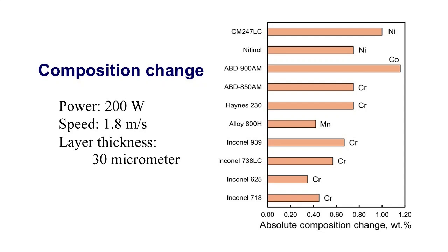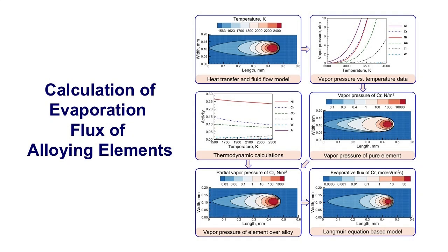A mathematical model is used to simulate the vaporization of alloying elements and the resulting composition change during laser powder bed fusion of nickel alloys. A heat transfer and fluid flow model is used to estimate the temperature field. The top surface temperature field and vapor pressure versus temperature data are used to compute the spatial distribution of the vapor pressure of pure elements. A thermodynamic model calculates the activities of all alloying elements, which are used to predict the partial vapor pressure of elements over the liquid alloy. The partial vapor pressures are then used in the Langmuir equation to calculate the evaporative flux of elements.